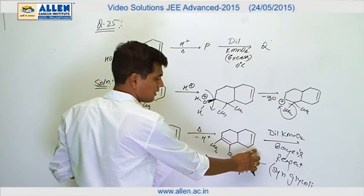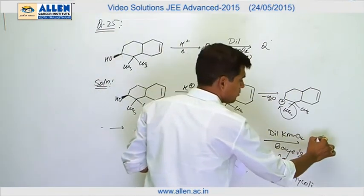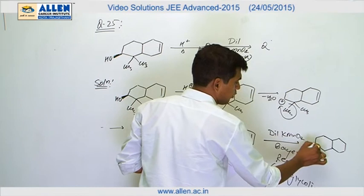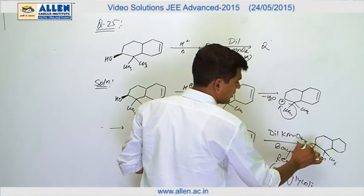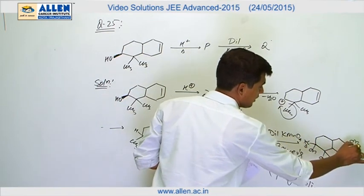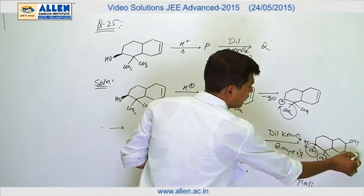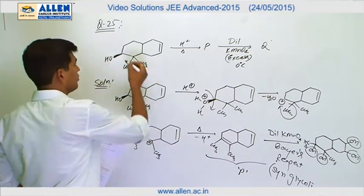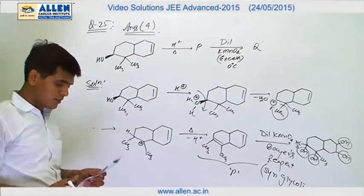On this double bond, glycolization adds OH and OH, and here also OH and OH. So the product would contain four OH groups — two methyl groups are already there and two OH groups on this side. The total number of OH groups in product Q is four. The answer is four.